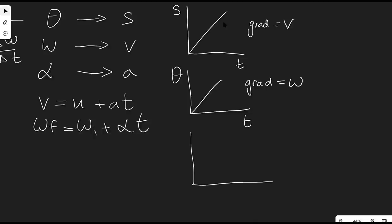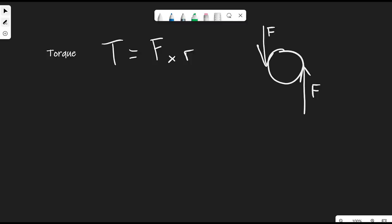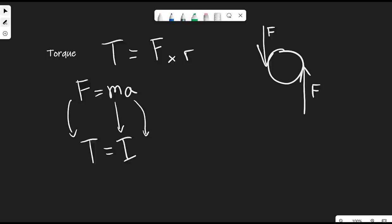Let's talk about forces. The net turning moment of a force is known as torque, where F is the force applied and R is the perpendicular distance to the axis of rotation. In normal dynamics the key equation is Newton's second law F = ma. In rotational mechanics, torque = I × α, where I plays the role of mass.